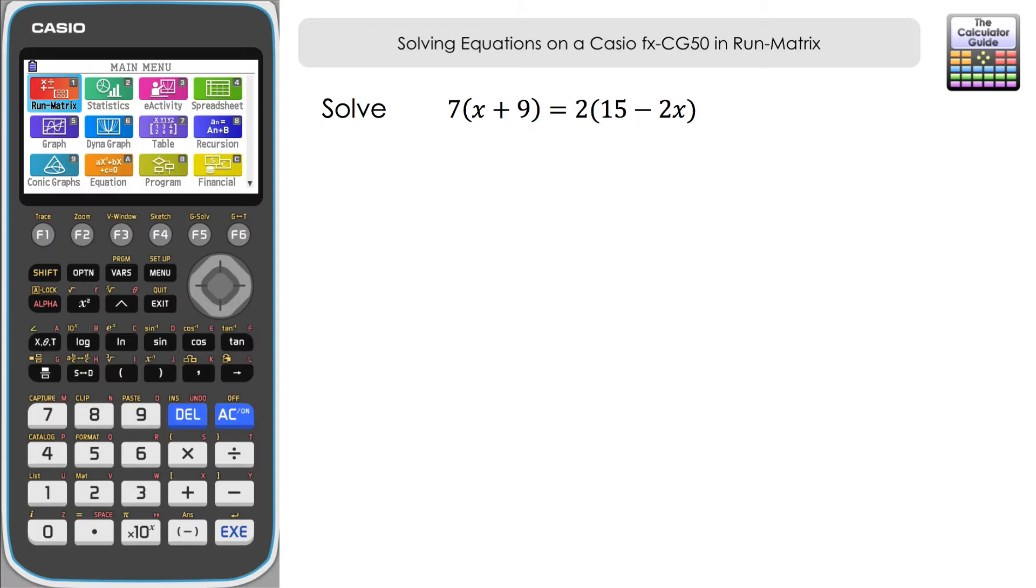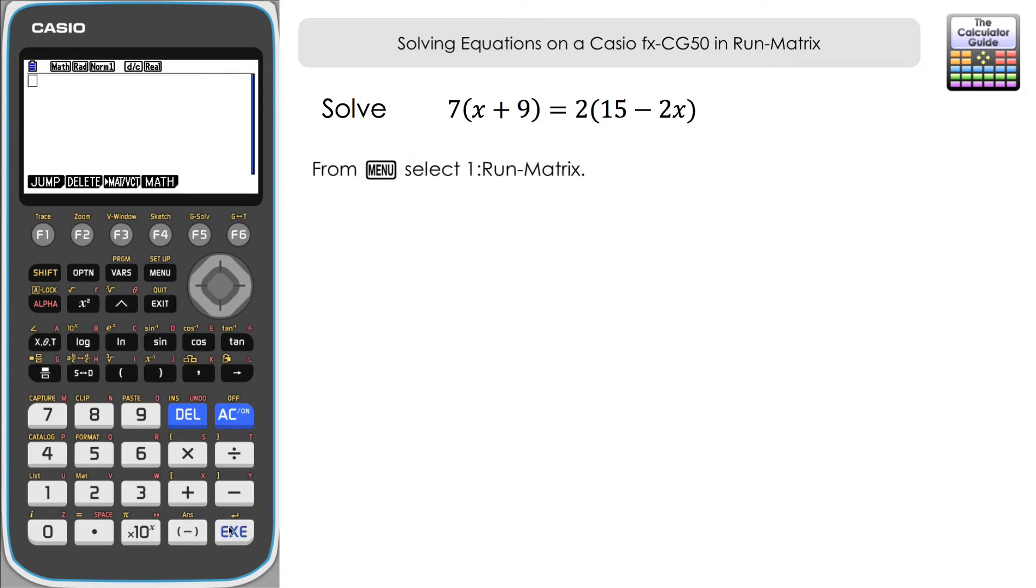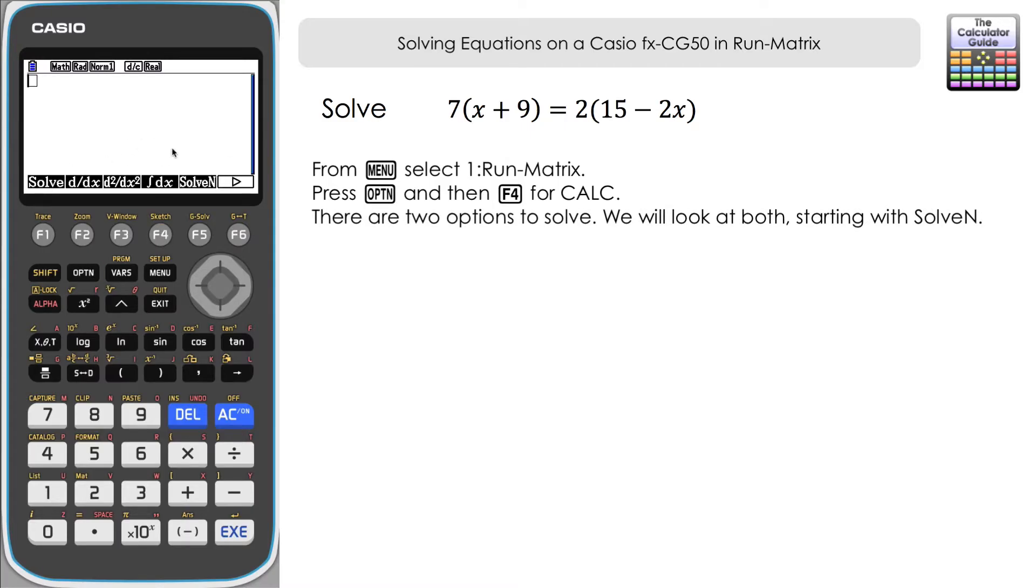So let's have a look at the first one. We need to solve 7(x+9) = 2(15-2x). From the menu we're going to go into Run Matrix and then press option, and then from there we're going to choose F4 Calc. You can see we've got two features here that have solve involved with them: SolveN and Solve.